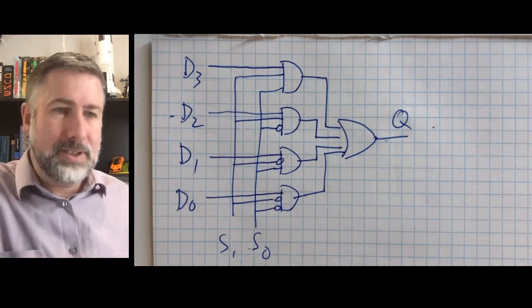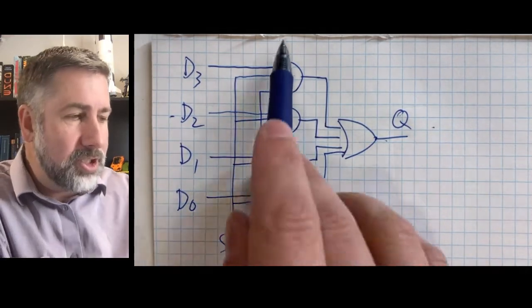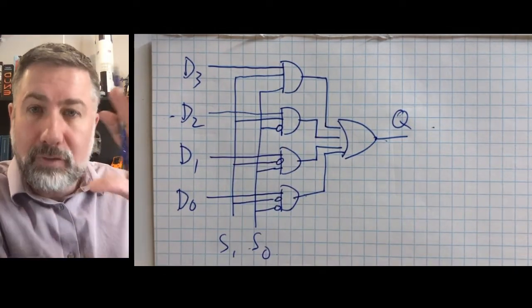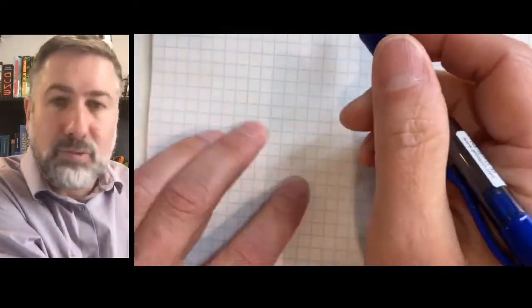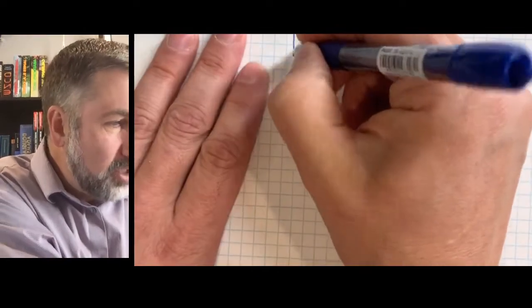Now the way we do this is again we're going to activate those min terms just like we did before, but we're going to take that data line, we're going to route it to all four of them and then just have them go separately. So in fact this is a really simple circuit. We're going to have our four min terms just like we had before.